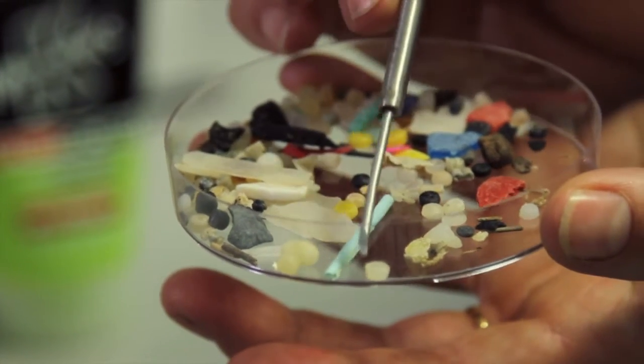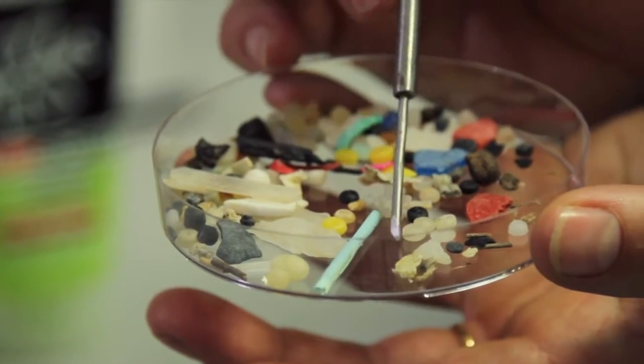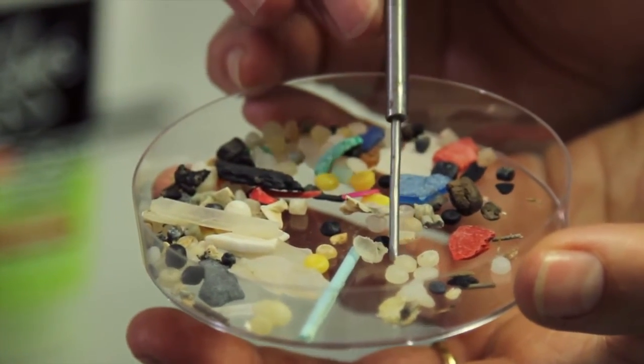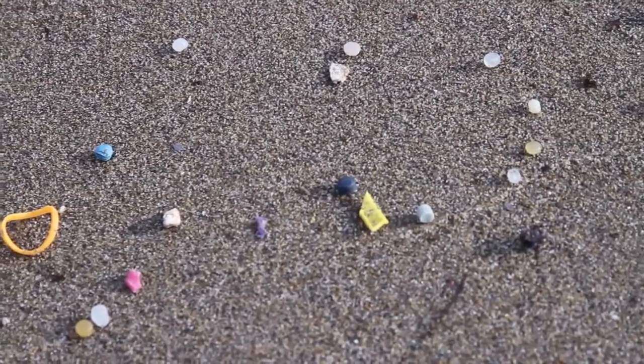You can also see these little round objects, they're called nurdles. Nurdles are interesting because they're the form of plastic that's transported around the ocean and you find them washed up on just about any beach.